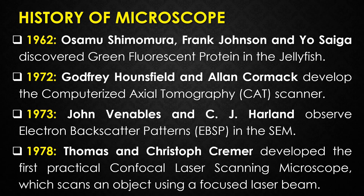With the help of a computer, the CAT scanner combines many X-ray images to generate cross-sectional views as well as three-dimensional images of internal organs and structures. In 1973, John Venables and C.J. Harland observed electron backscatter patterns (EBSD) in the scanning electron microscope. These electron backscatter patterns provide qualitative microstructural information about the crystallographic nature of metals, minerals, semiconductors, and ceramics.